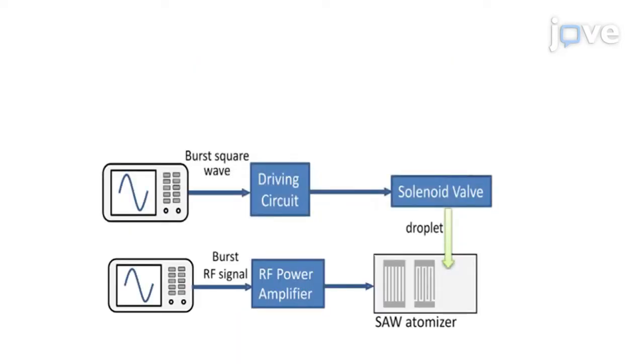Next, connect a burst square wave generator to allow a 24 volt pulse signal to a solenoid valve used as a microdispenser. Set up a micro air pump to drive fluid from a reservoir to the microdispenser. Use an air pump to guarantee the microdispenser is filled with liquid for optimization.